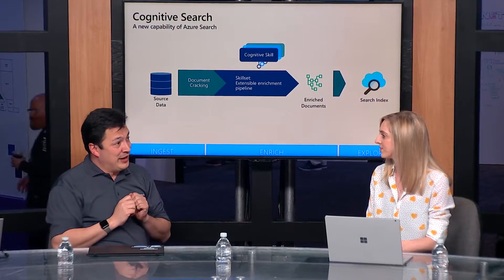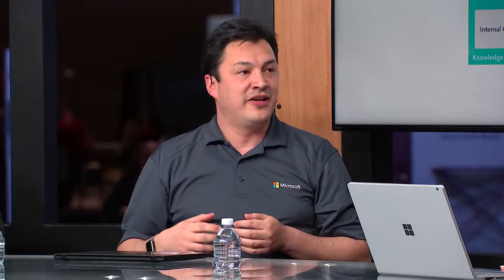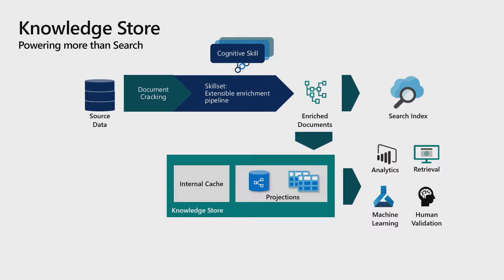We have a new capability now in public preview that we call the knowledge store. The knowledge store allows us to project this tree of information that we extracted into tabular shapes or into object shapes so that you can do other things beyond search, such as analytics on Power BI or training your own machine learning models. We're very excited about that capability as well.